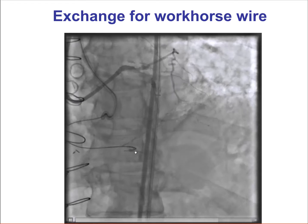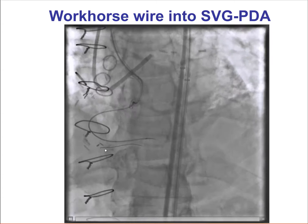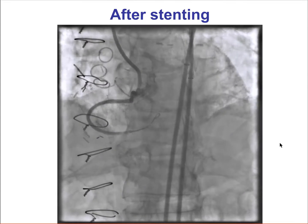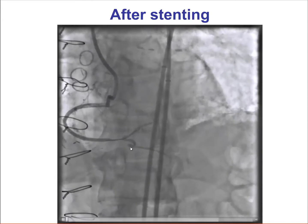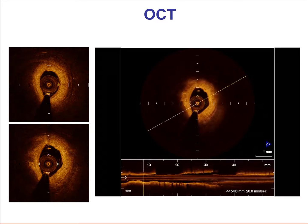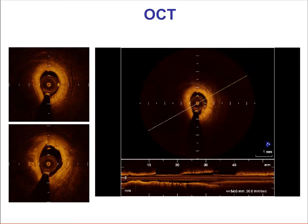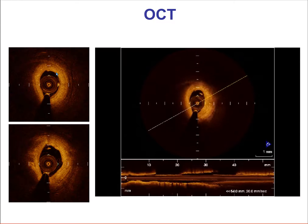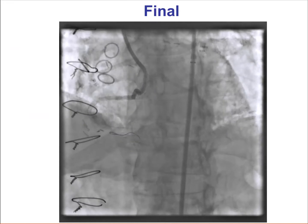We exchanged using a Corsair catheter for a soft workhorse guidewire, which advanced into the occluded vein graft to the posterior descending artery. We were then able to successfully stent the vessel, achieving TIMI-3 flow. A question remained regarding the health of the distal vessel and whether there was a dissection distal to the stents. To clarify this, we performed optical coherence tomography, which demonstrated diffuse disease in the vessel without any distal dissection — only some diffuse fibrous lesion distal to the stents. As a result, we elected not to place an additional stent.